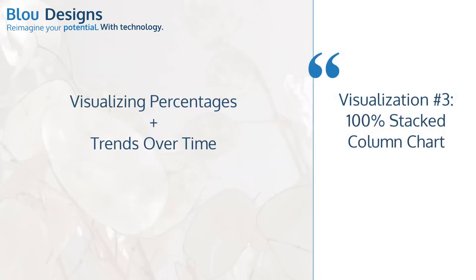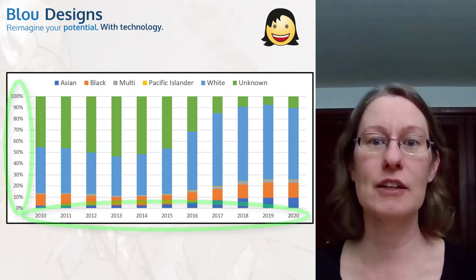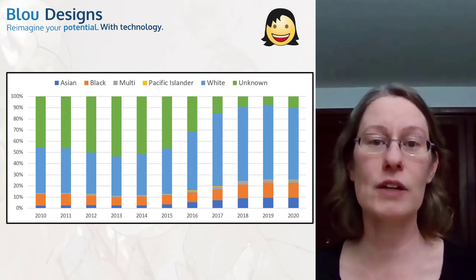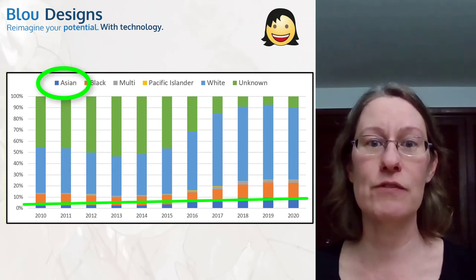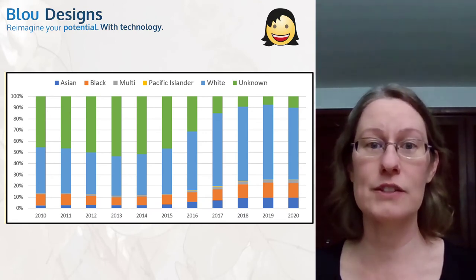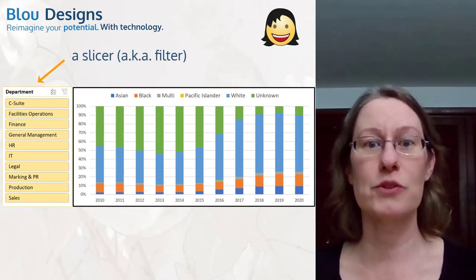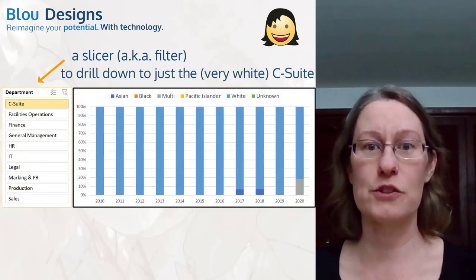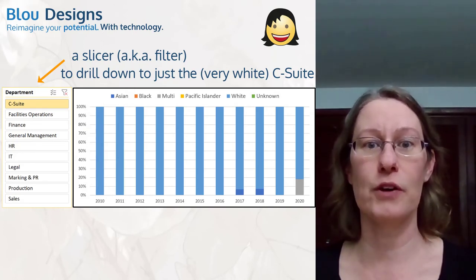My favorite option for this scenario is the 100% stacked column chart. This format provides trends over time as well as percentages at each of the time slices. Each column represents 100% of the data at that time, sort of like a flattened pie chart. At a glance, you can quickly see how each racial classification is trending over time, which means you can get the information you need for the question you're asking and reserve your mental energy for reflecting on what the data is telling you and what you want to do next. When you combine this visualization with a slicer or filter, it's also easy to explore the trends in terms of departments and other factors in your data set, providing a richer context and better understanding of where you might need to focus your efforts to achieve your goal.